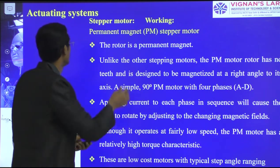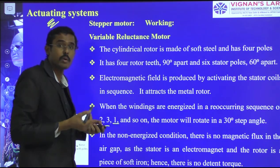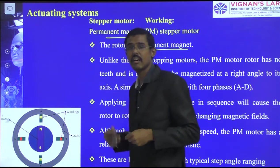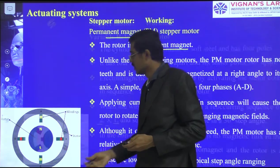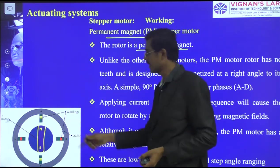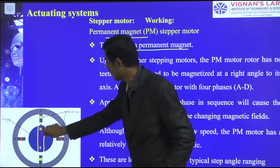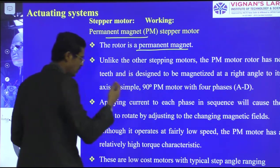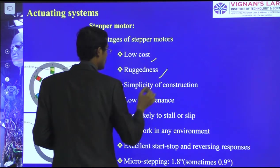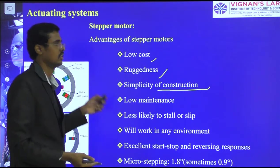For the permanent magnet stepper motor, the difference is that the rotor is a permanent magnet with north and south poles. The rotor teeth are reduced compared to the variable reluctance type, and windings are applied as usual to achieve changes in angle. Advantages of the stepper motor include low cost, ruggedness, simplicity in construction, and low maintenance.